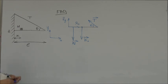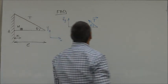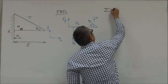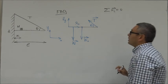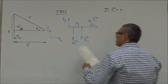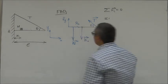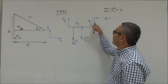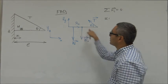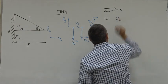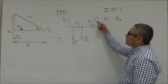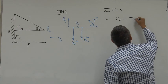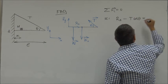With the free body diagram ready, we can write the conditions for static equilibrium. The first condition is that the sum of all forces equals zero. Looking at the X components: we have R-X and the X component of tension. R-X points in the positive direction, so it's just R-X. The X component of T points in the negative X direction, so it's minus T cosine theta. This equals zero.